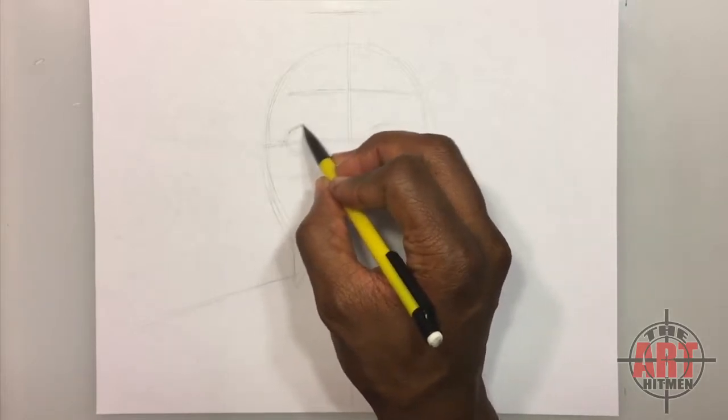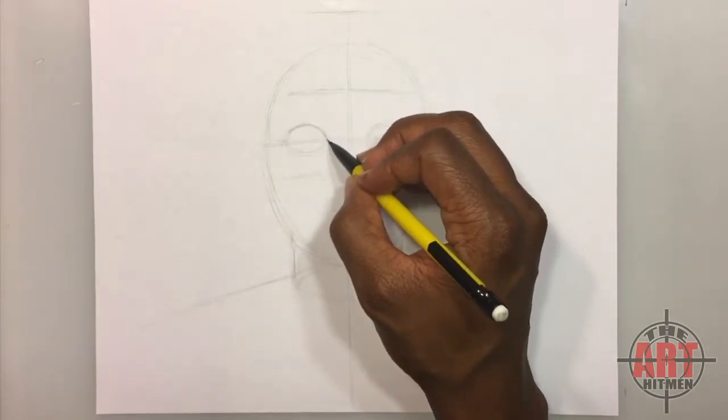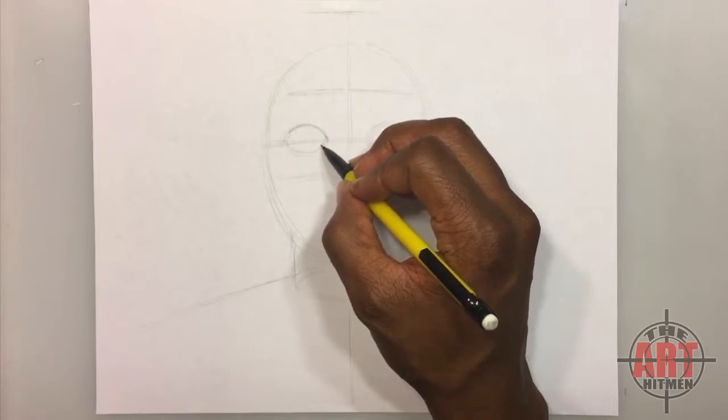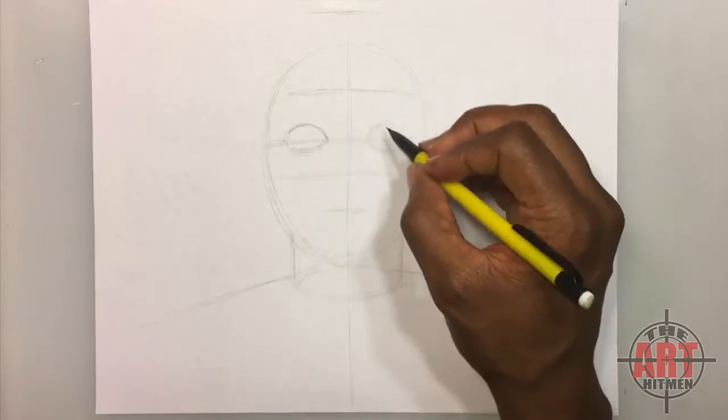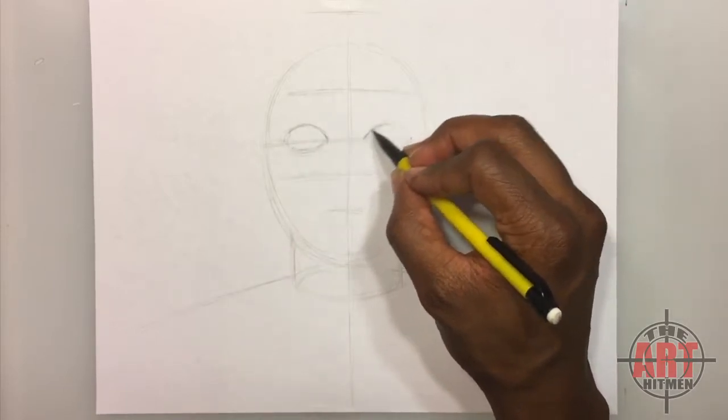And then with his eyes you're going to have it come up at around, down to the center like this. And then do the bottom of it. Do the same thing on his left eye, arc it.